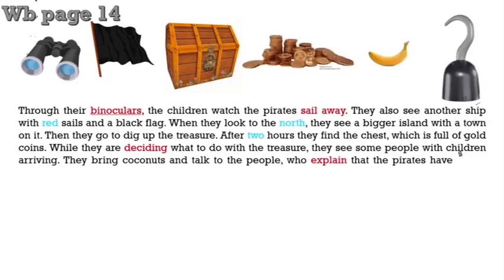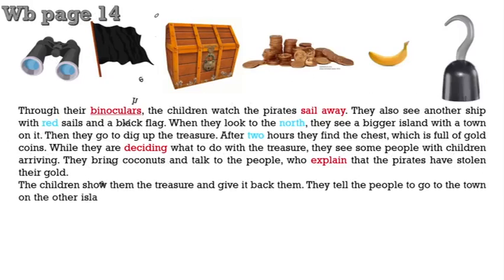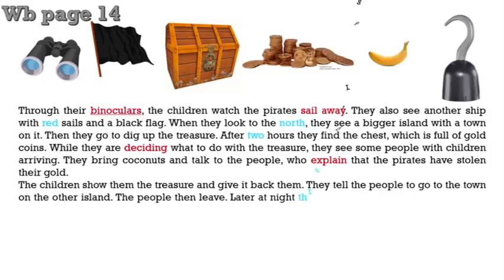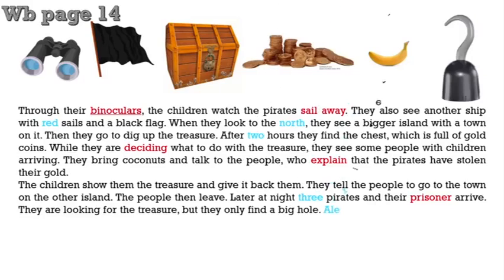They bring a canoe and talk to the people who explain that the pirates have stolen their gold. The children show them the treasure and give it back to them. They tell the people to go to the town on the other island. The people then leave. Later at night, three pirates and their prisoner arrive. They are looking for the treasure but they only find a big hole.